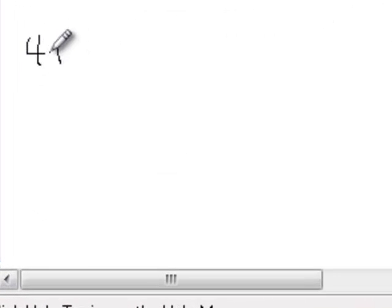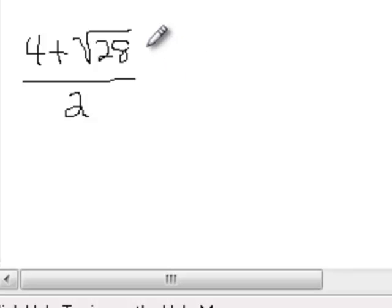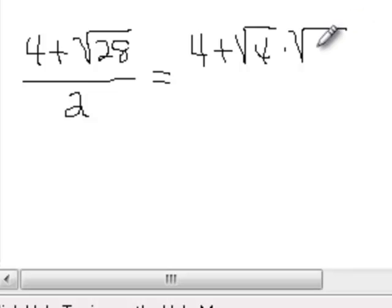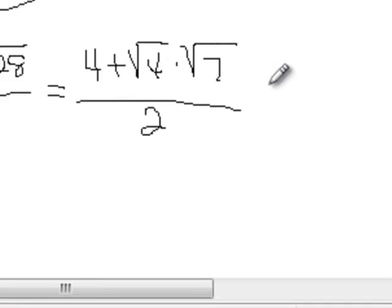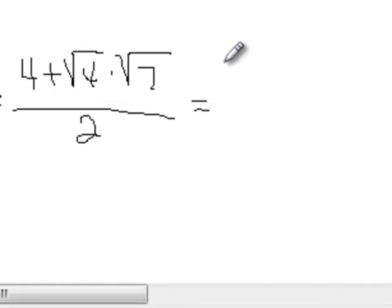4 plus square root of 28 over 2. Now the perfect square in 28 is 4. So that's 4 plus square root of 4 times square root of 7 all over 2. Now the square root of 4 is 2, so we would have 4 plus 2 square root of 7 over 2.